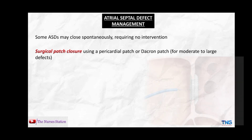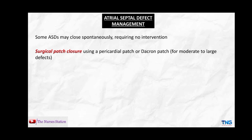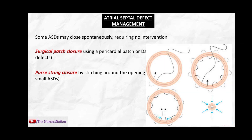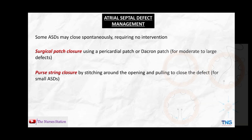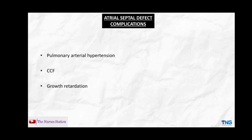For medical management, some ASDs may close spontaneously requiring no intervention. When intervention is required, surgical patch closure using a pericardial patch or a Dacron patch is used for moderate to large defects. Purse-string closure involves stitching around the defect and pulling the thread to close it, used for small ASDs. Arrhythmias and congestive cardiac failure associated with ASD must be managed medically. Complications include pulmonary arterial hypertension, congestive cardiac failure, and growth retardation.